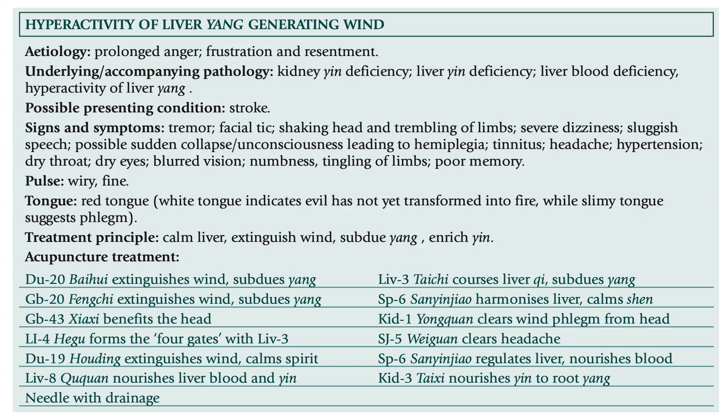Acupuncture treatment: DU 20 extinguishes wind and subdues yang. GB 20 extinguishes wind and subdues yang. GB 43 benefits the head. LI 4 forms the four gates with Liver 3. DU 19 extinguishes wind and calms the spirit. Liver 8 nourishes liver blood and yin. Liver 3 courses liver qi and subdues yang. Spleen 6 harmonizes the liver and nourishes blood. KD 1 clears wind phlegm from the head. Sanjiao 5 clears headache. Kidney 3 nourishes yin to root yang. Needle with drainage.